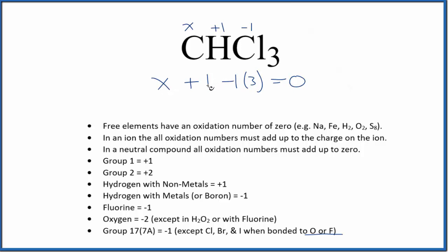So negative three and one, that gives us negative two. X minus two equals zero. So X, that'll equal a positive two.